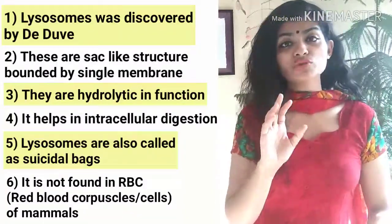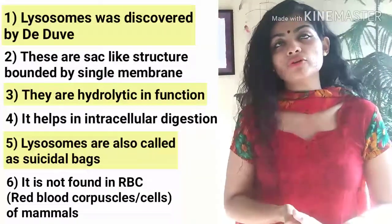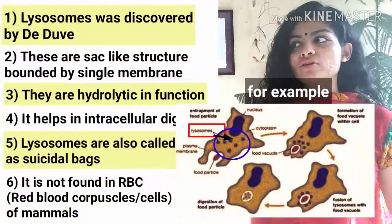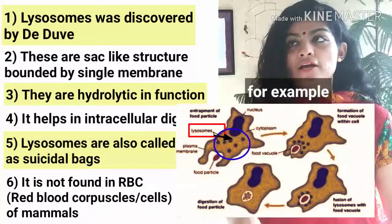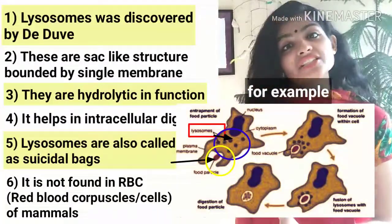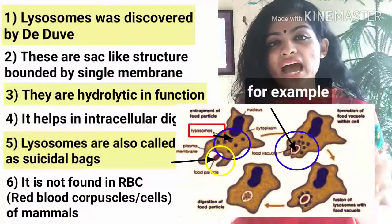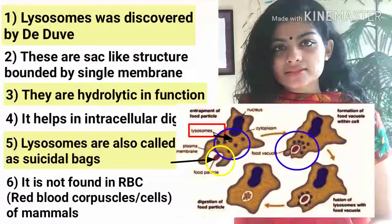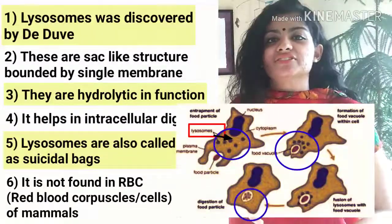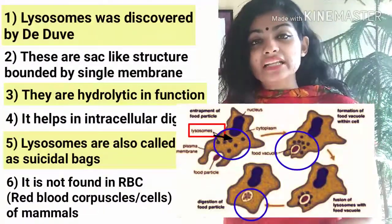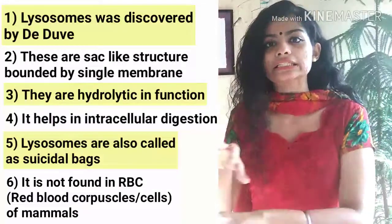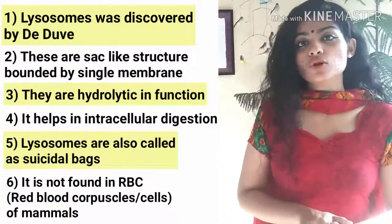Lysosome is very important for the cell — it acts as a guardian, watchman, or protector. The moment any bacterial cell, disease-causing organism, or cancerous agent enters the cell, lysosomes digest the entire bacterial cell using hydrolytic enzymes, which break the bonds holding the bacterial cell together, destroying it completely. In this way, lysosomes destroy any organism that would cause disease.